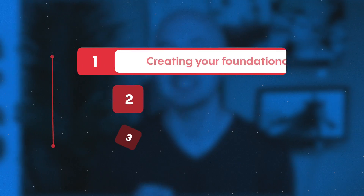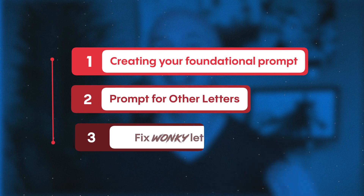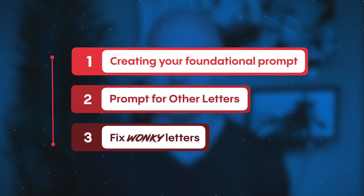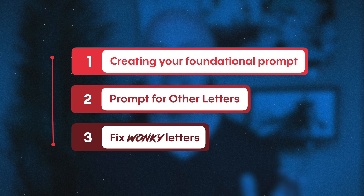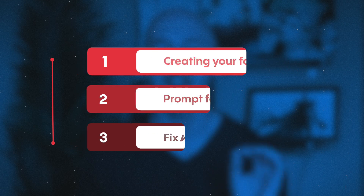You may have noticed that some of these didn't turn out very well, so step three is fixing the wonky letters. For some reason, certain letters just don't generate easily — L, T, and even O are the ones I've noticed the most.